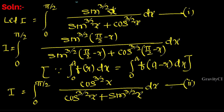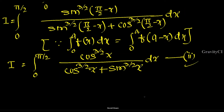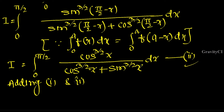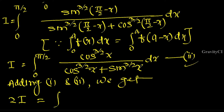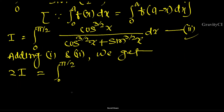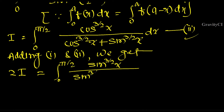Suppose this is equation two. Now adding equation one and equation two, we get 2I equal to the integral from 0 to π/2 of (sin^(3/2)(x) + cos^(3/2)(x)) / (sin^(3/2)(x) + cos^(3/2)(x)) dx.